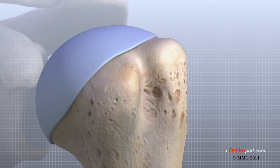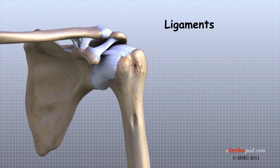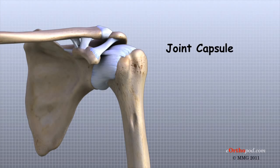There are several important ligaments in the shoulder. Ligaments are soft tissue structures that connect bones to bones. The joint capsule is a watertight sac that surrounds a joint. In the shoulder, the joint capsule is formed by a group of ligaments that connect the humerus to the glenoid. These ligaments are the main source of stability for the shoulder, helping hold it in place and keep it from dislocating.